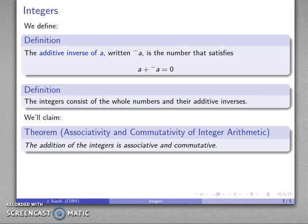And we'll make the following claim without too much explanation. We'll say that this is true, there is a proof of it but we won't go into it, which is that the addition of the integers is both associative and commutative.